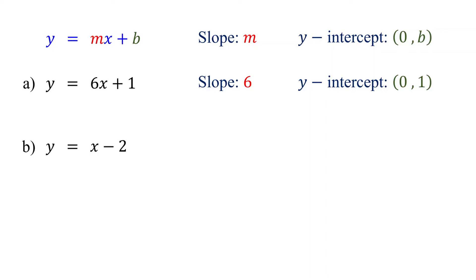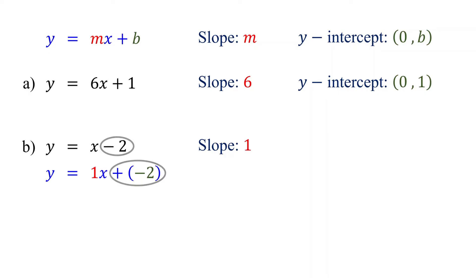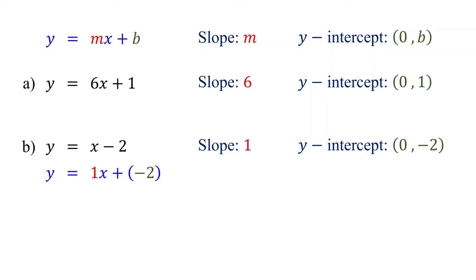What if there is no number in front of x? That means the coefficient is 1, so the slope is 1. Remember, minus 2 is the same as plus negative 2. So b is negative 2, and the y-intercept is (0, -2).